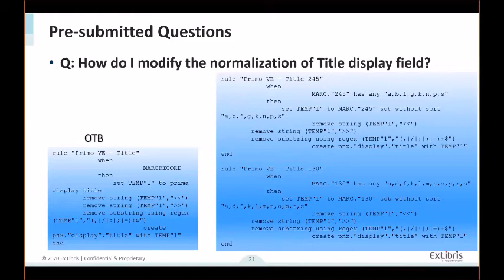You now have rules which reflect the mapping of the title — you have the 245 and 130 for journals — and you can add or remove subfields and modify the action section.